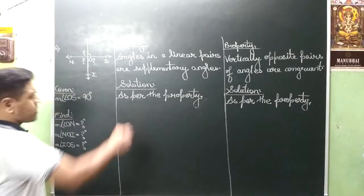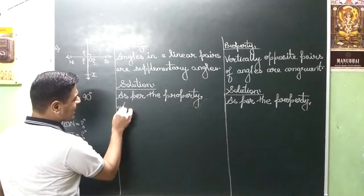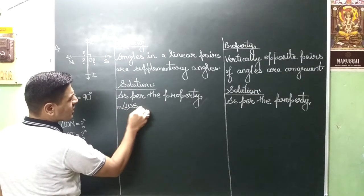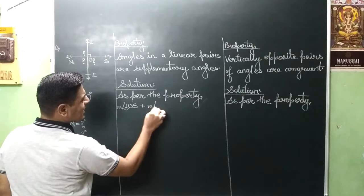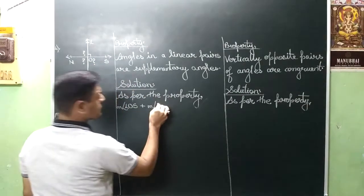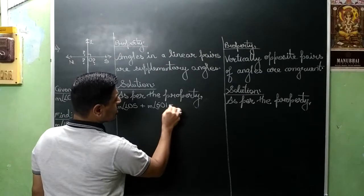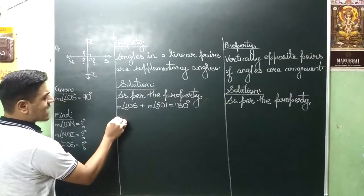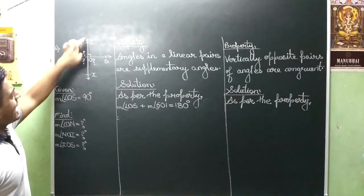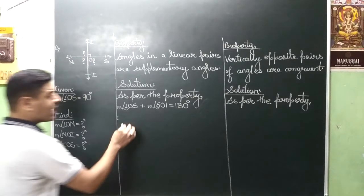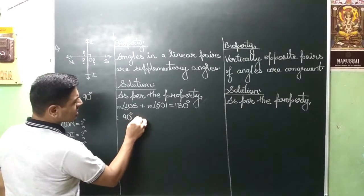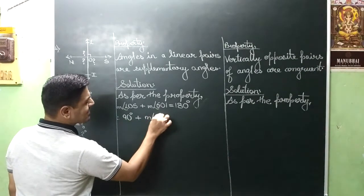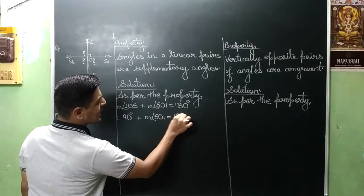So let us take this one. That is measure angle LOS plus measure angle SOI is equal to supplementary means 180 degree. Now substitute the value, LOS is having this right angle symbol. So we will write here 90 degree plus SOI will be copied down is equal to 180 degree.